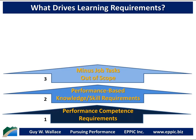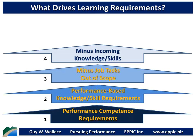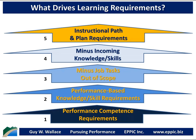Those can be modified by taking out the job tasks that are out of scope for the individual. Just because someone has a similar job title to others doesn't mean that their job assignment specifics are exactly the same. Next, we must remove the incoming knowledge and skills that the individual has, unless we intend to train them on things that they already know. That leads to an instructional path and plan requirements that matches the performance requirements of the individual given their specific job assignment and their incoming knowledge and skills.